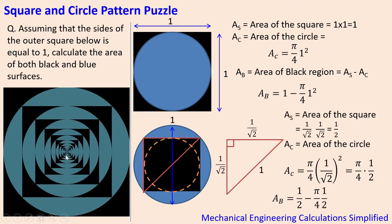Let's start with the problem. We have a one-by-one square here and a circle inscribed inside the square. The circle is having the blue area and the square is having the black region. The black region is nothing but the area of the square minus the area of the circle. Area of the square is one, and the diameter of the circle is exactly equal to the side of the square, so the black region is one minus pi over four.